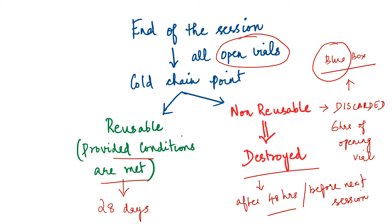In summary, at the end of every immunization session, all open vials are sent to the cold chain point, where they are segregated into reusable and non-reusable. Reusable vials, if conditions are met, can be used in subsequent sessions for up to 28 days. Non-reusable vials will be discarded into the blue box and then destroyed.